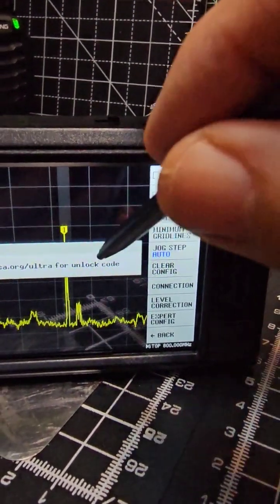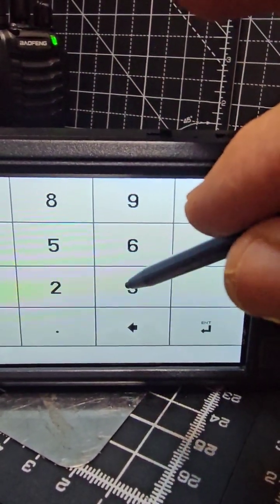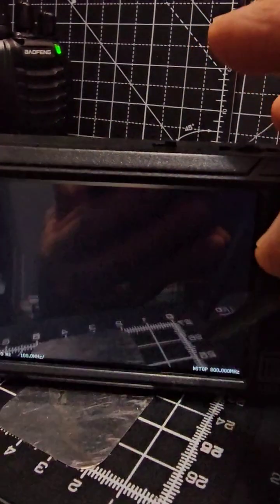Now if you haven't already done this, you get this screen. Tap it and the password is four three two one, enter.